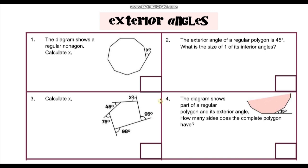You can use a calculator. Question one: the diagram shows a regular nonagon. If you're not sure what a nonagon is, you can just count the number of sides — there are nine sides in a nonagon. We need to calculate x, which is one of the external angles. The key word here is 'regular', meaning each external angle is the same. The sum of external angles of any polygon is always 360 degrees, so these nine external angles sum to 360 degrees. Because they're all the same, we divide 360 by nine.